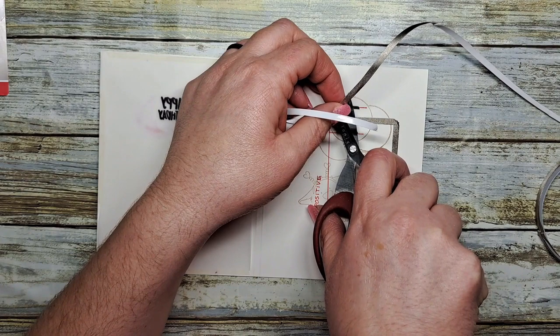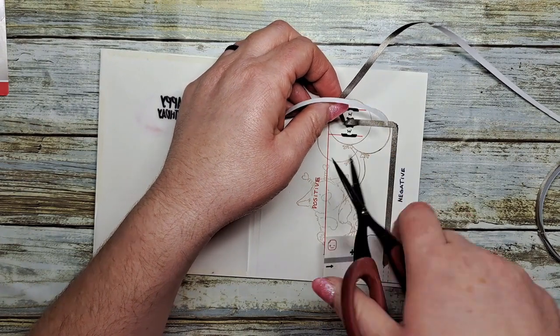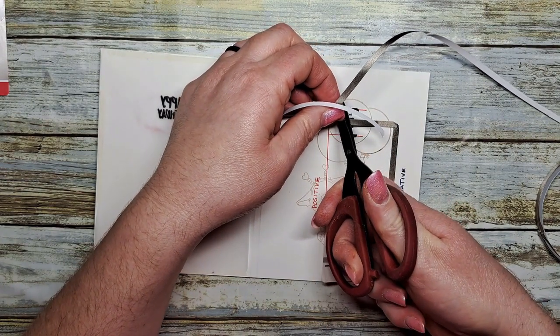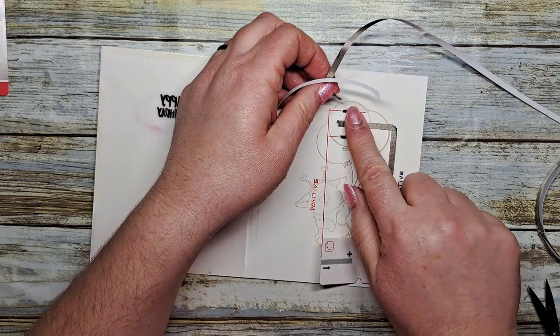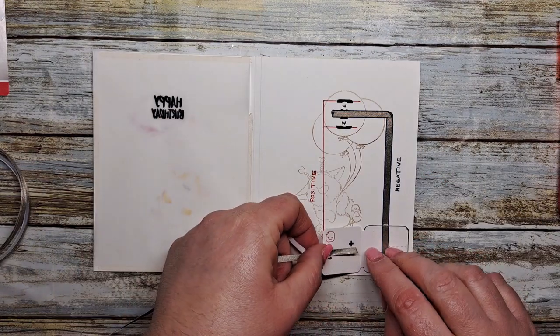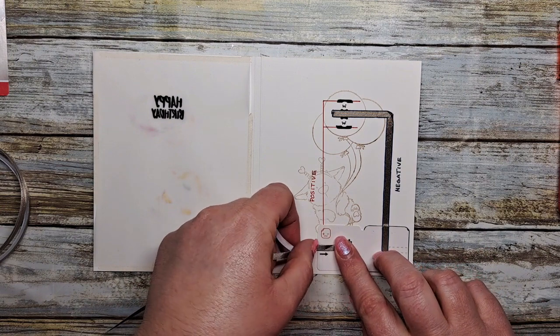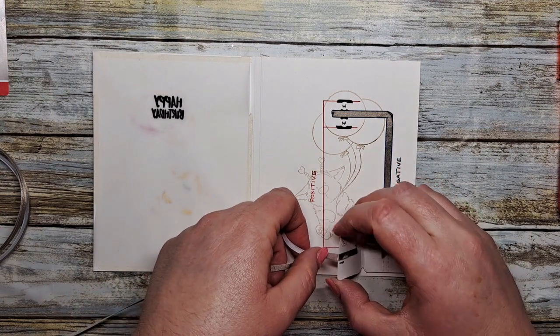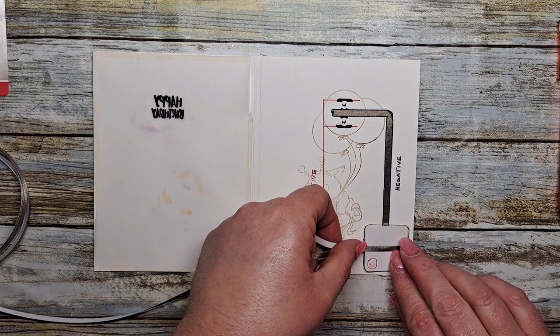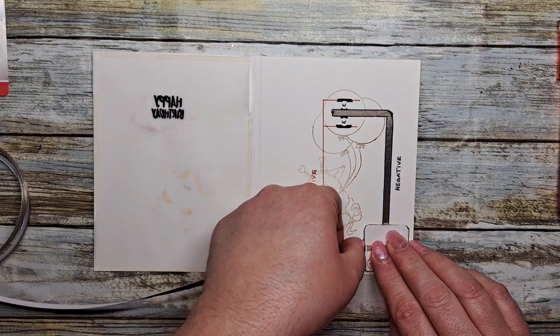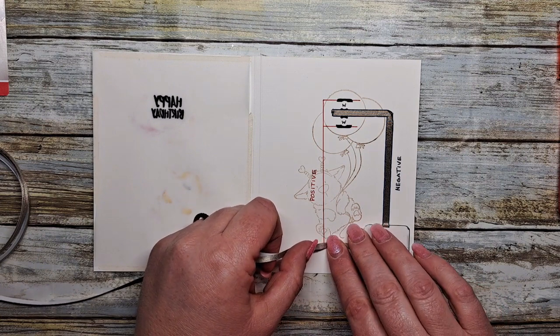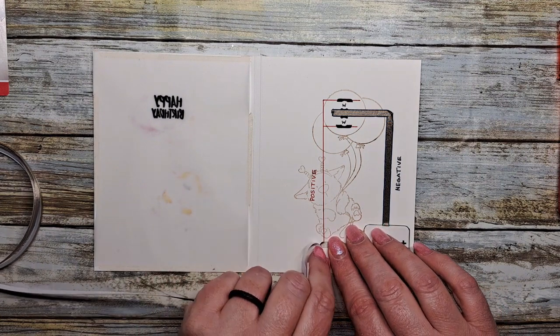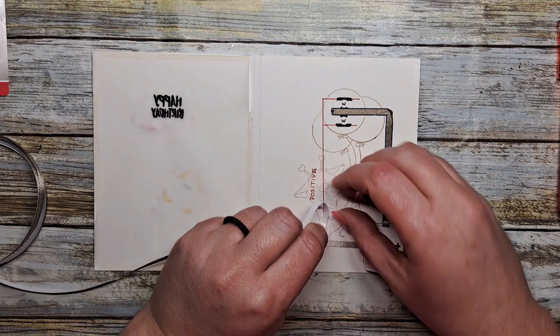Then we're going to take our conductive fabric tape across the positive side of our circuit. We're going to start on the inside flap of our battery holder and wrap it all the way around to the front and then back down to the panel in which we're building our circuit. Again, just a flip of the tape to fold back on itself to create that 90 degree corner.